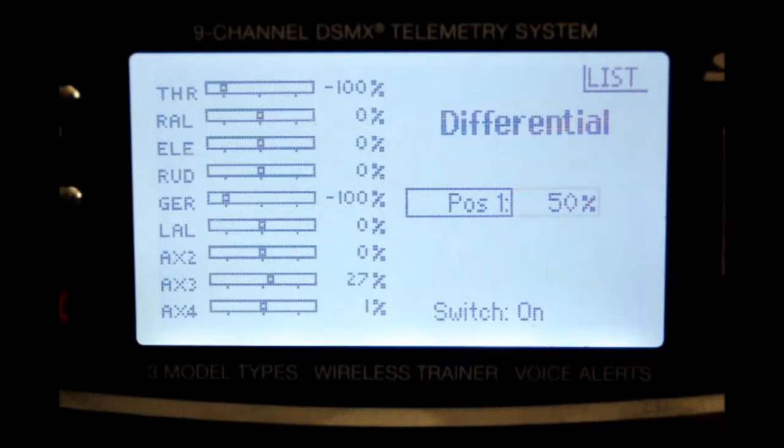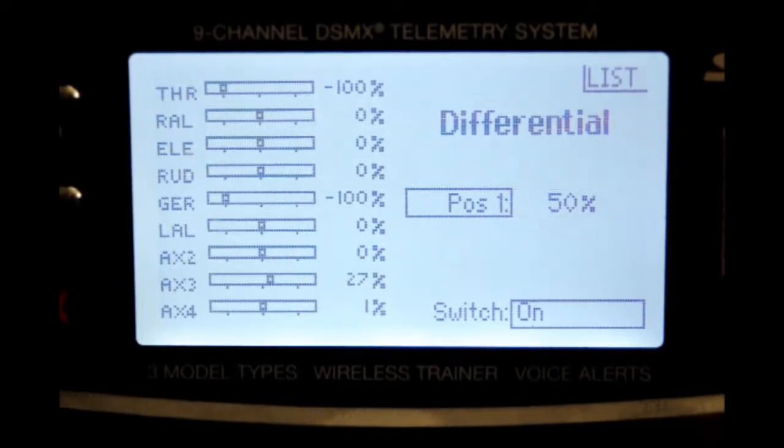Go ahead and depress the scroll switch once and now we go to the switch selection. In my case I'm going to leave it constantly on all the time because I want that differential on my aircraft at all times. But you can also assign it to a different switch position. That way you can turn it on or off at will.